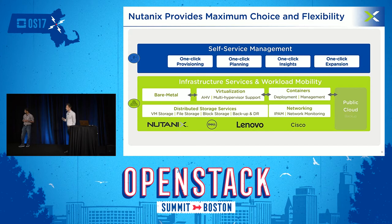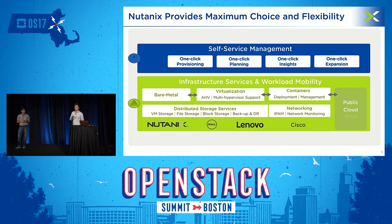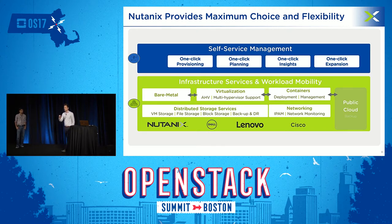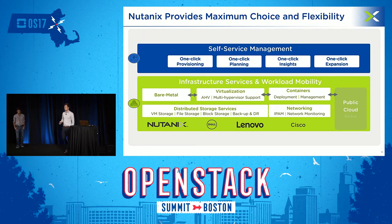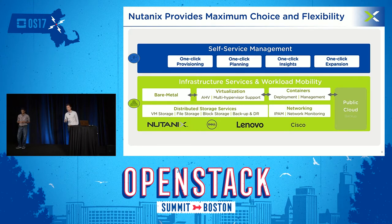If you zoom in on the Enterprise Cloud OS, you will see two big software buckets. The first bucket is the engine that drives everything in your data center, called Acropolis, marked green in this slide. Within Acropolis, we offer all the data center services to run not just virtualized applications but also dockerized apps, and you can connect bare metal non-virtualized workloads to the Nutanix fabric to run tier-one applications like SAP or SQL.